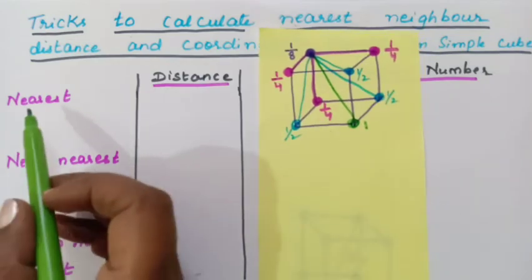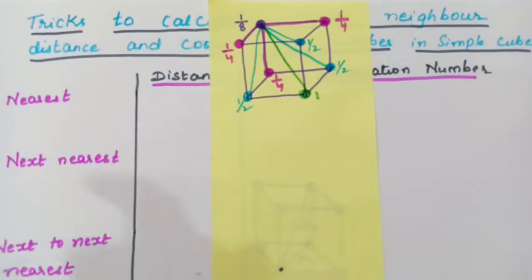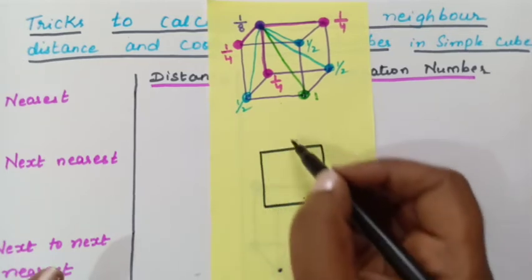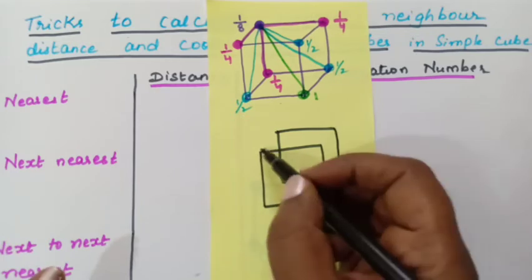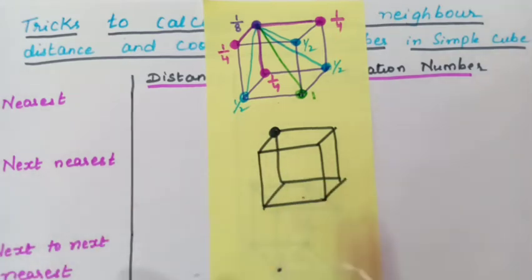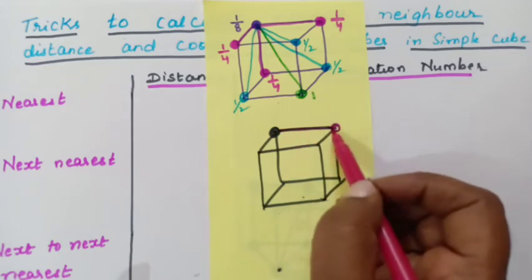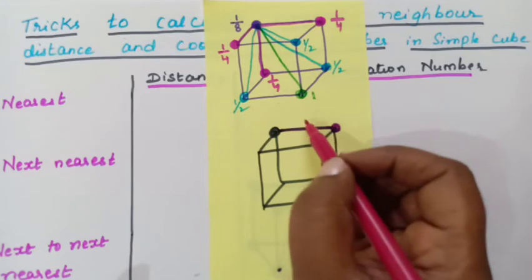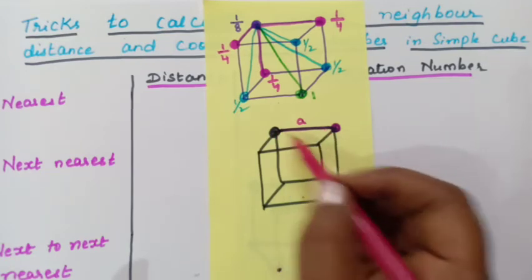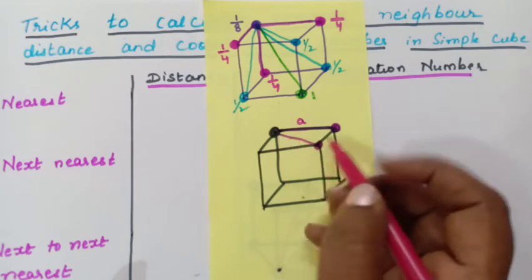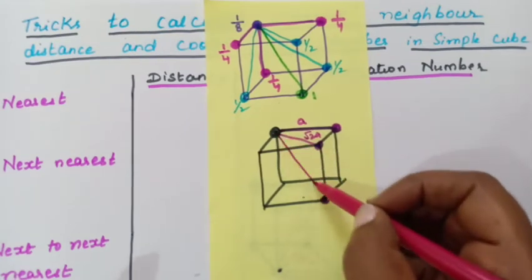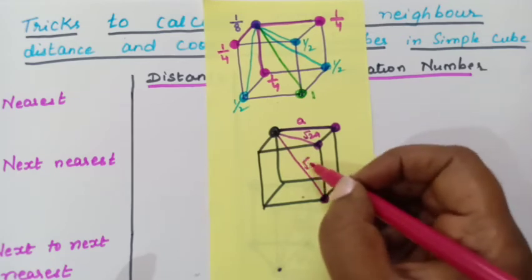So now let us find which atom is nearest to this corner atom. Let me draw another simple cube. This is a simple cube, and this is one corner atom. So now this edge length — from here to here, if an atom is present, this distance we call it A, the edge length represented by A. From here to here, the distance is root 2A — it is called the face diagonal. And from here to here, this is the body diagonal and its distance is root 3A.